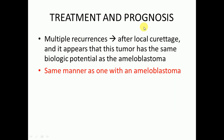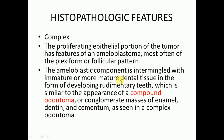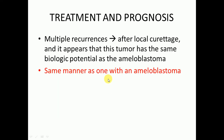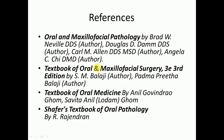Now we'll discuss treatment and prognosis. There are multiple recurrences after local curettage, and it appears that this tumor has the same biological potential as ameloblastoma. Therefore, we should treat it similarly to ameloblastoma — resection is the better choice of treatment, because curettage and enucleation carry a high risk of recurrence.